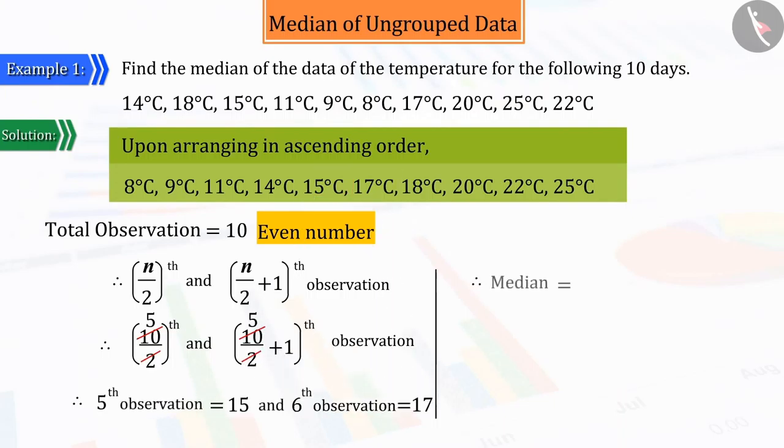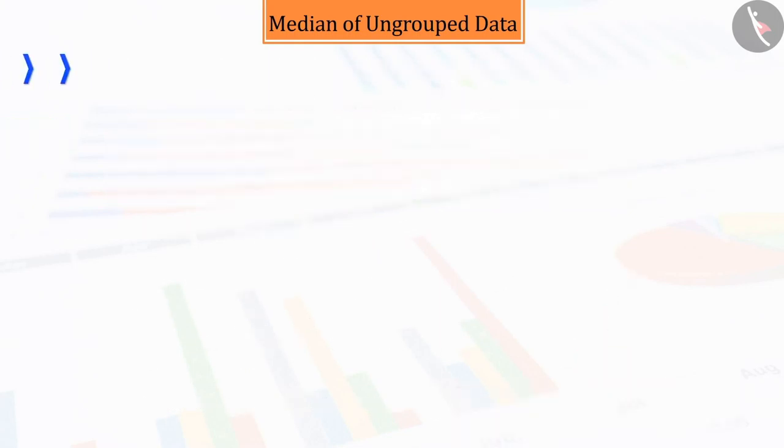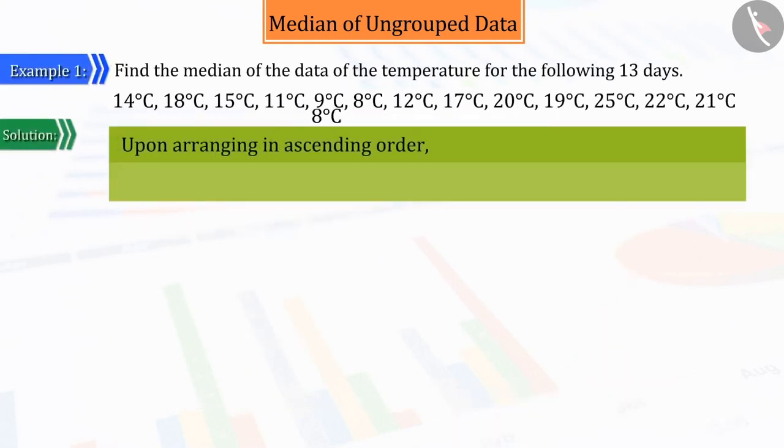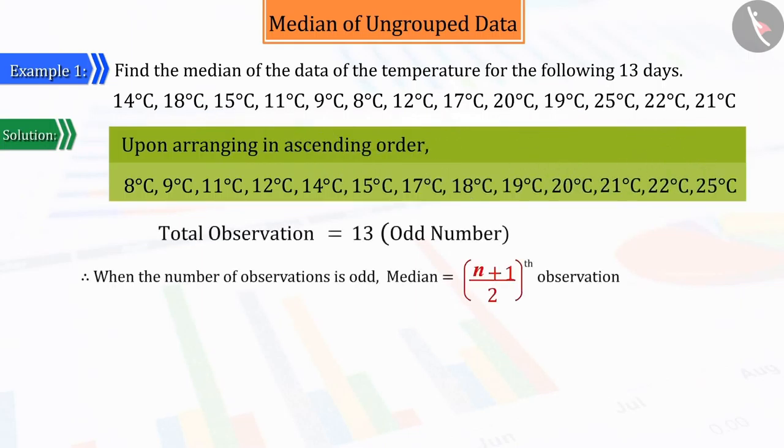From which we get the median of the entire data as 16 degrees Celsius. And if the number of figures would be odd, then the median would be the value of (n+1)/2 th observation.